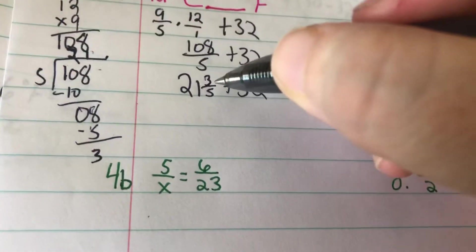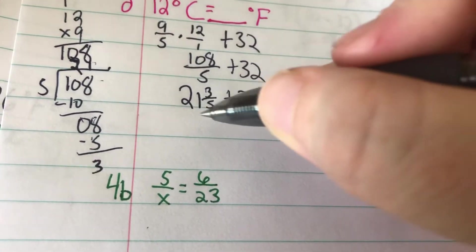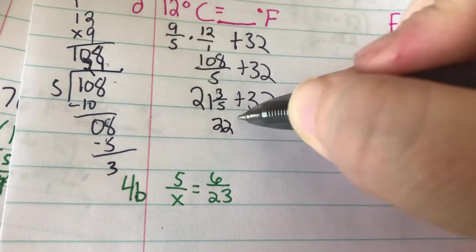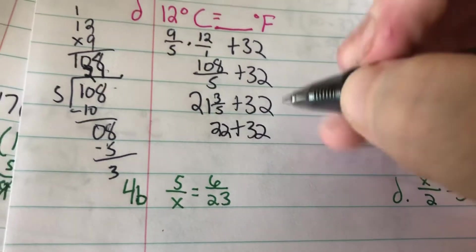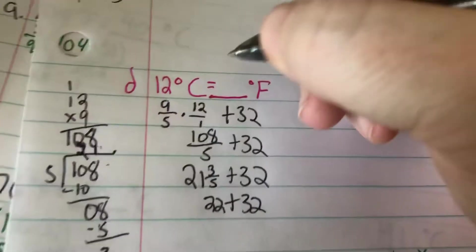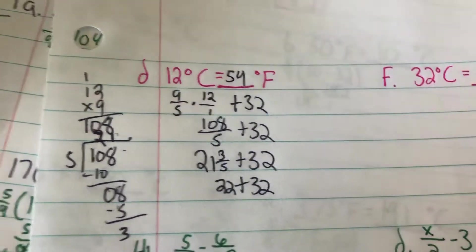I know that this is more than half, so I can go ahead and round that up to 22 plus 32, which is going to be 54 degrees Fahrenheit.